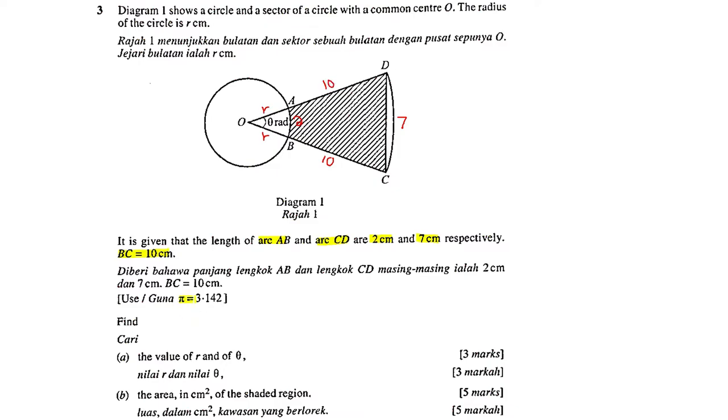By using pi equals 3.142, first you need to find the value of R and theta. Secondly, you need to find the area of the shaded region. So we look at arc AB first.